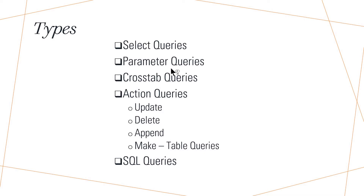In the case of a parameter query, it displays a dialog box and asks the user to provide criteria for retrieving records from the table, or a value to insert in a field, column heading, or attribute. Crosstab queries are a special type of query mainly used for analyzing data. These queries are also helpful in calculating sum, average, or any other aggregate functions.